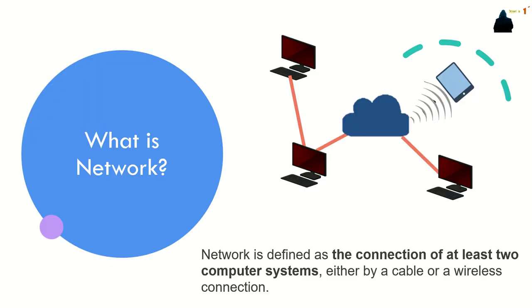First, what is a network? In information technology, a network is defined as the connection of at least two computers, either by cable or wireless connection, as you can see in this picture. The simplest network is a combination of two computers connected by cable. This type of network is also called a peer-to-peer network.